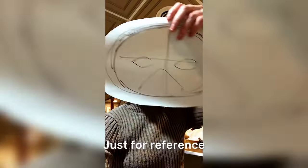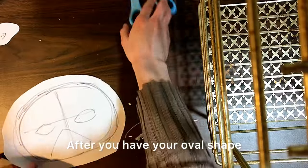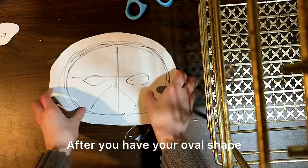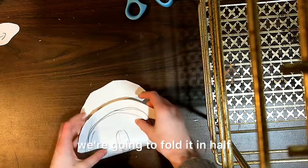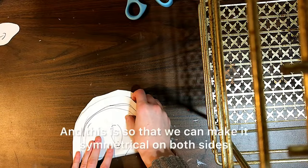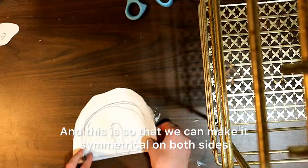Just for reference, this is about how big I'm making mine. After you have your oval shape, we're going to fold it in half. And this is so that we can make it symmetrical on both sides.